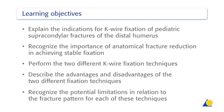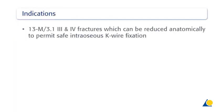Upon completion of this exercise, you should be able to explain the indications for K-wire fixation of pediatric supracondylar fractures of the distal humerus, recognize the importance of anatomical fracture reduction in achieving stable fixation, perform the two different K-wire fixation techniques, describe the advantages and disadvantages of the two fixation techniques, and recognize the potential limitations with both techniques in relation to the fracture pattern. The clinical indications include 1-3-M-3-1-3-4 fractures, which can be reduced anatomically to permit safe intraosseous K-wire fixation.